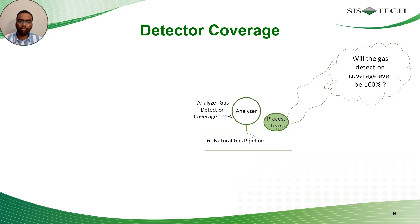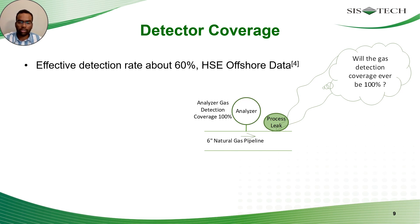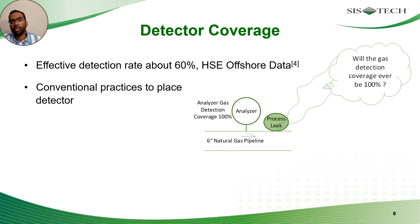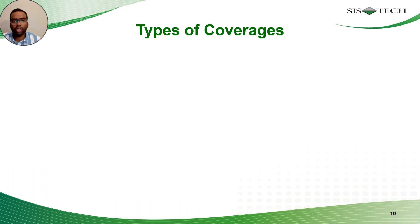Detector coverage is critical to overall FGS effectiveness. An analysis done by HSE on hydrocarbon release data showed that irrespective of the type of FGS design, the effective detection rate was about 60%. There are conventional practices carried out to place detectors — often based on experience or similar existing facility arrangements. However, there are many influencing factors: the nature of the release, environmental conditions, size and shape of the process area, presence of ignition sources, and the acceptable exposure limit for toxic releases.